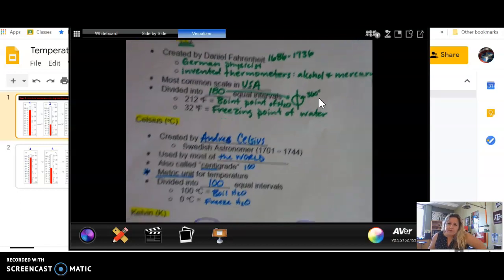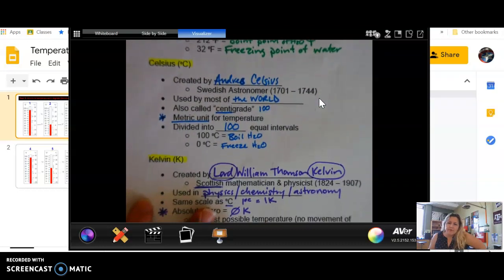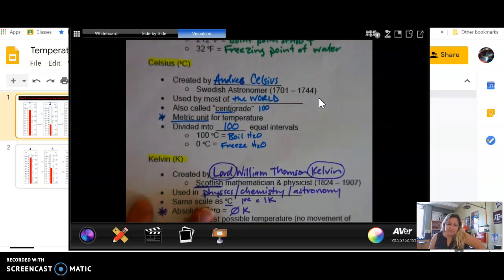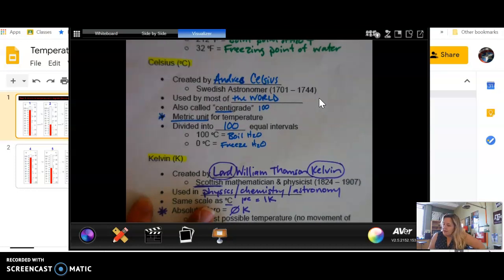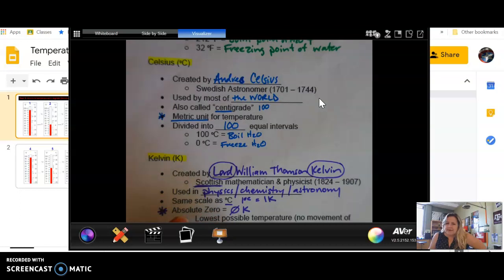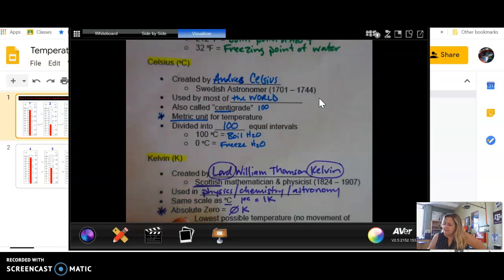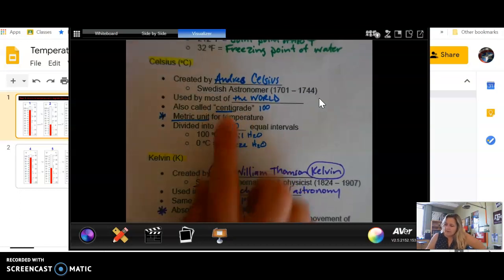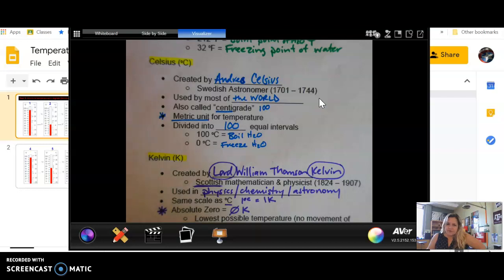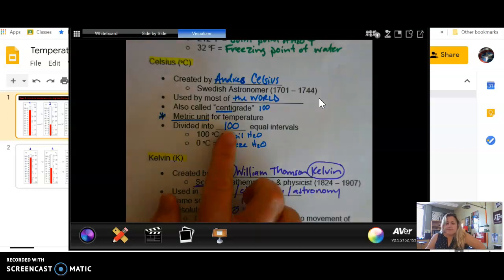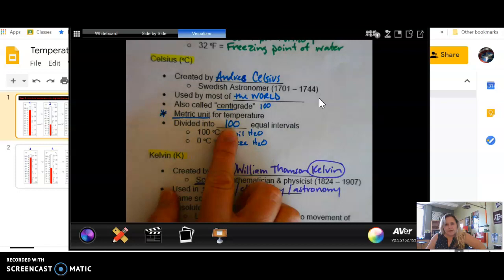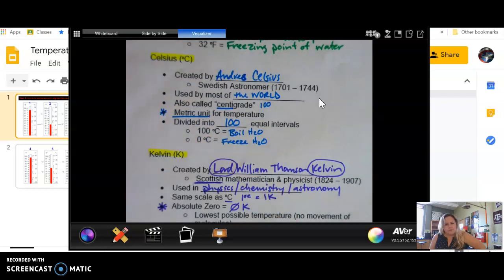Now notice a little bit later along comes Mr. Celsius and he improves upon Fahrenheit's model. Because that's what scientists do. They take something and they make it better. This is what the entire world uses except us, and the entire scientific community. You may hear it called centigrade. Centi means 100. But this is the metric unit for temperature. We divvied up to 100 because it's centigrade. And these are way easier numbers to remember, don't you think?